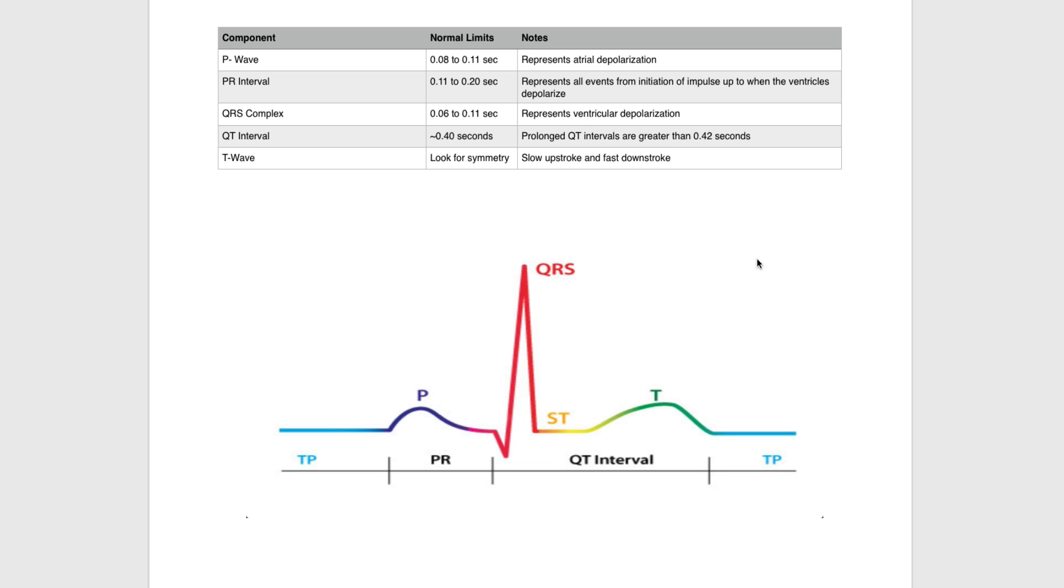Those are the five major components of the ECG beat and the normal limits of each one. Check back soon for future videos on arrhythmia identification and 12-lead ECG interpretation.